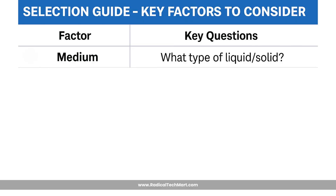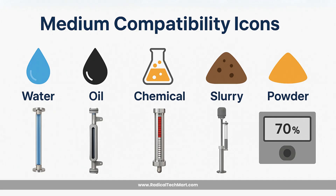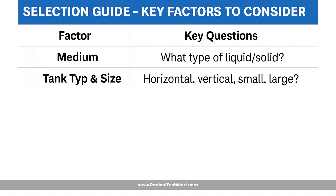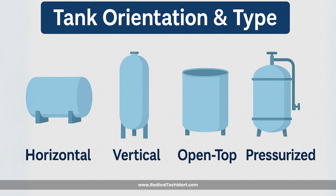Now let's cover the level indicator selection guide. To select the right level indicator, you need to consider several factors. First, what is the medium — water, oil, slurry, chemical, fuel, or powder? Is it clean, viscous, or opaque? Second, consider the tank type and size — horizontal or vertical, open top, closed, or pressurized.